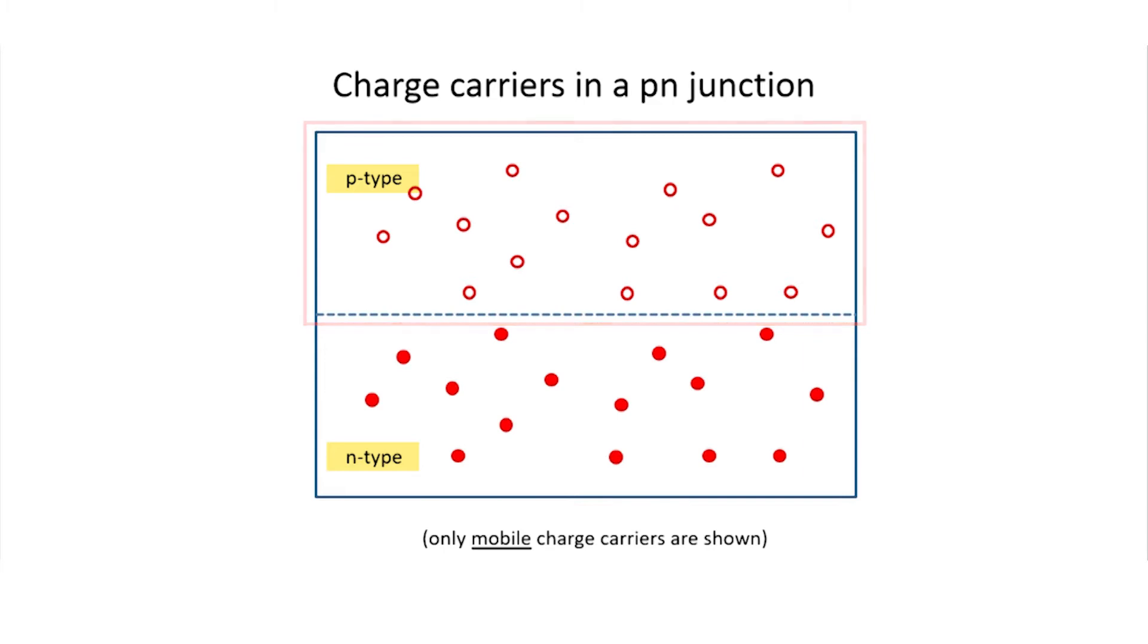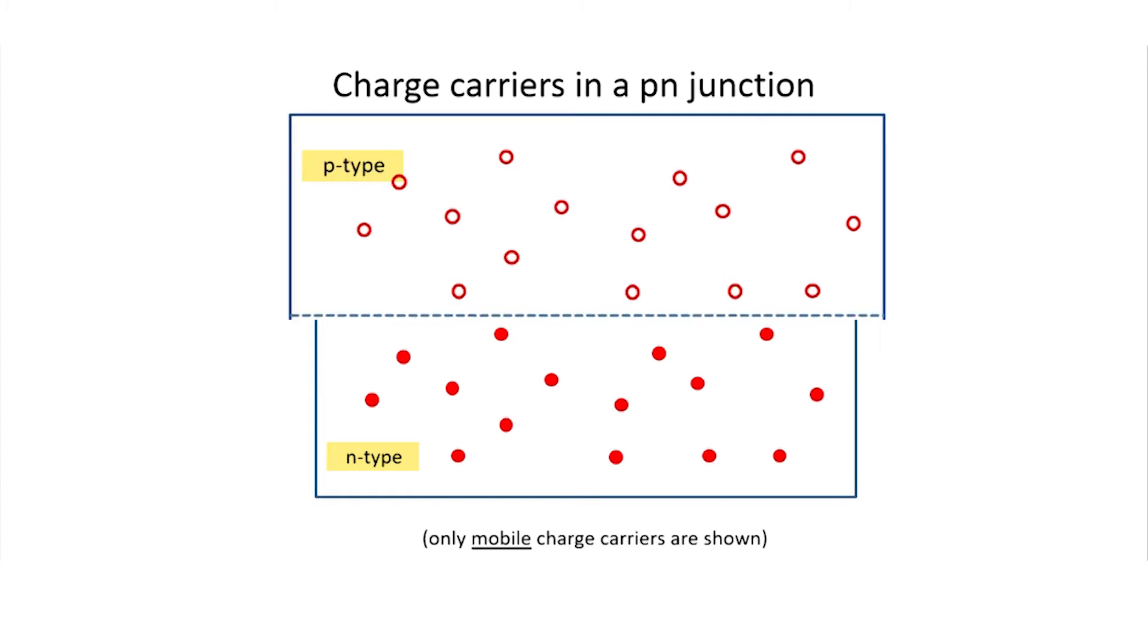What I've drawn here are only the mobile charge carriers. Silicon has a lot of electrons that are just locked into the crystal where the bonds haven't been broken. Those don't make any difference because they can't move. They can't participate in electrical conduction. So what I'm trying to illustrate down here are the mobile electrons, the electrons in the conduction band donated to the lattice by the phosphorus. And what I'm illustrating up here are the holes in the valence band that are free to move around the crystal.